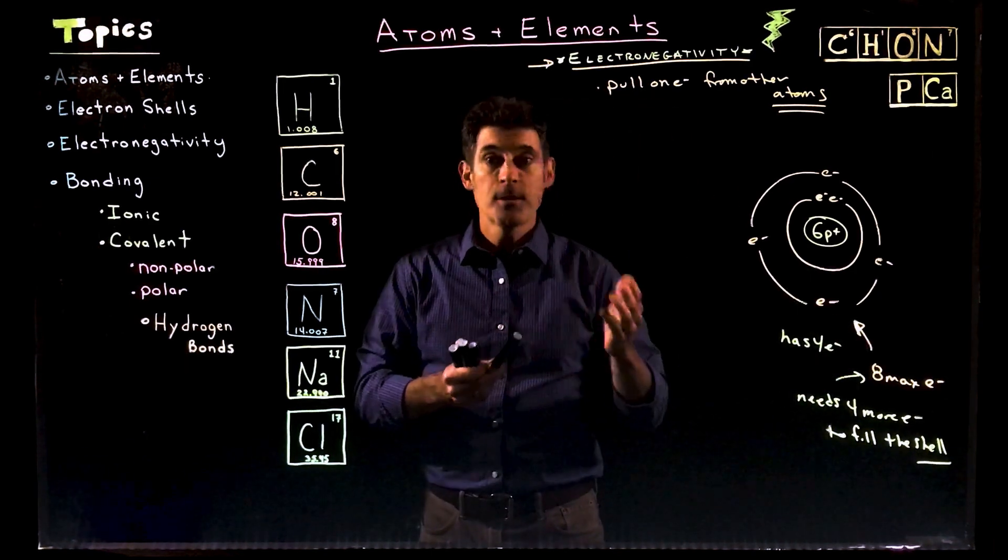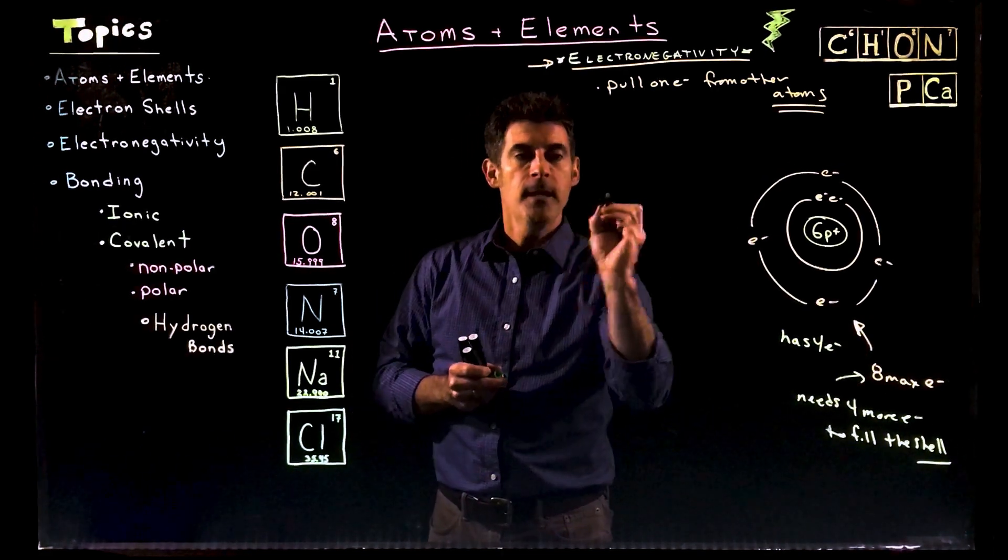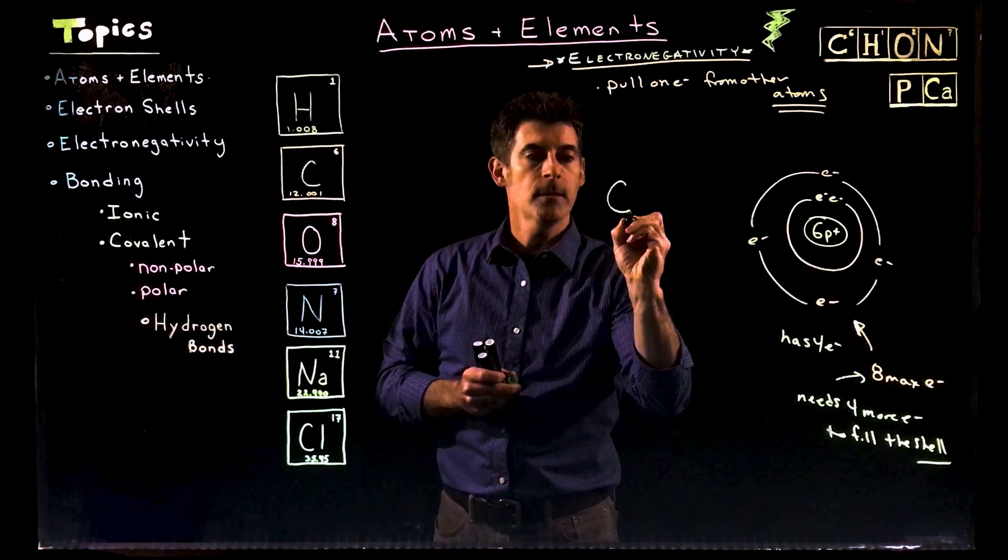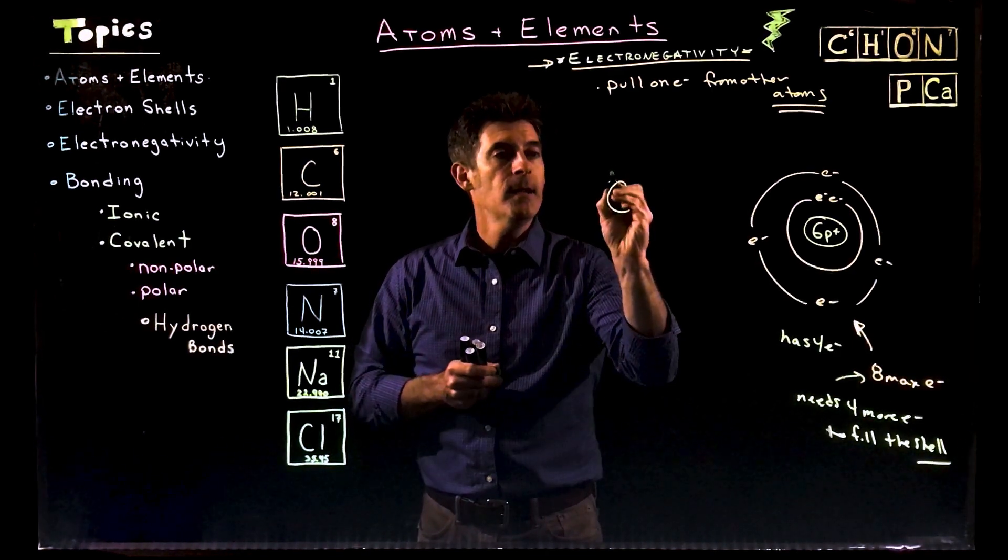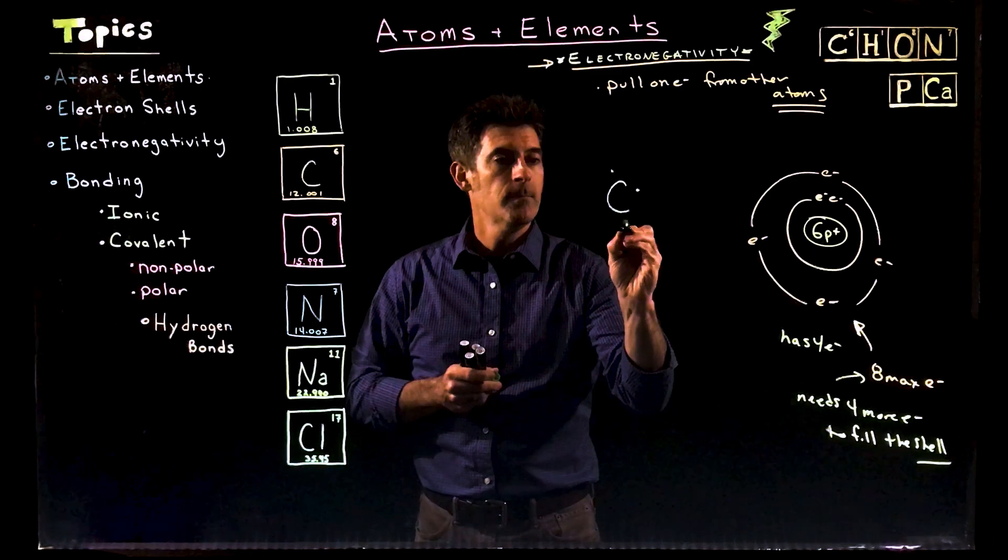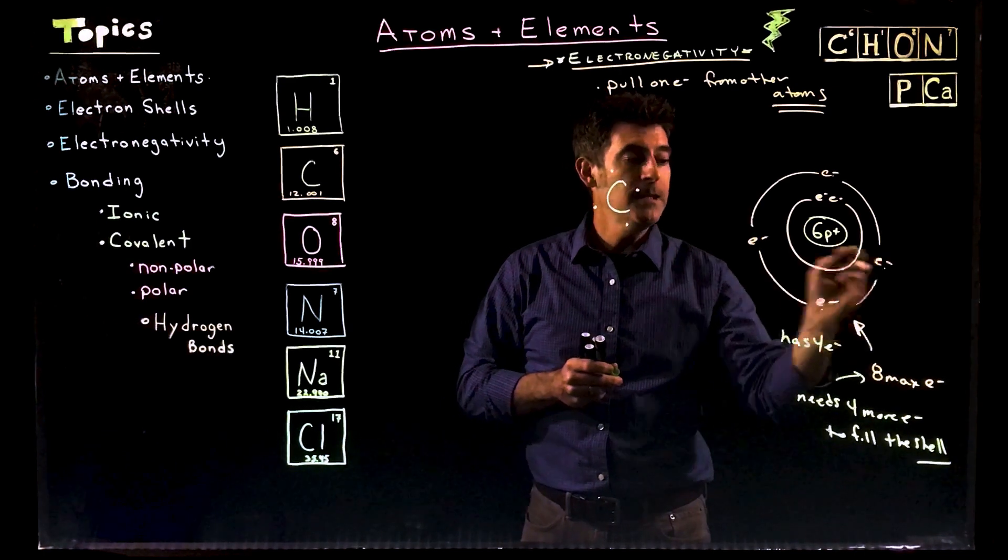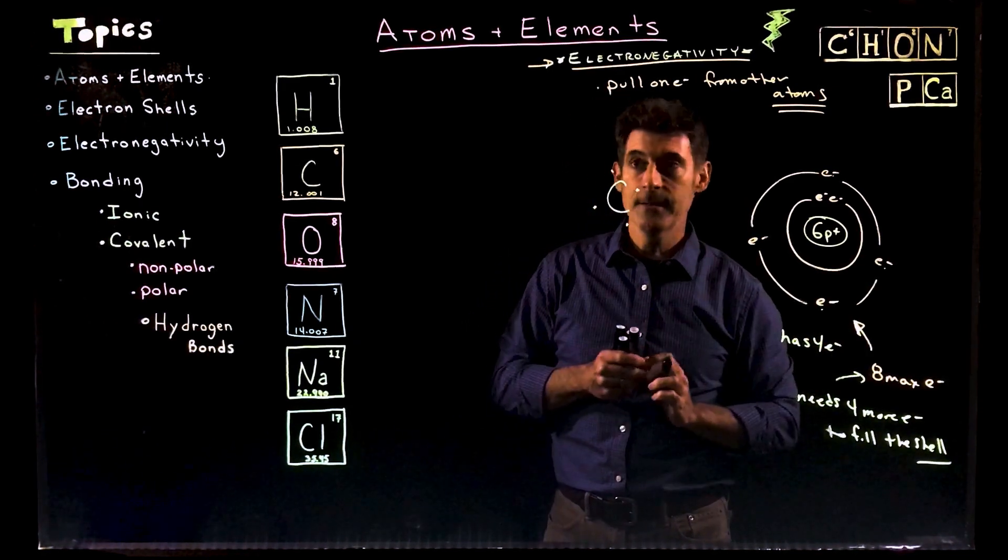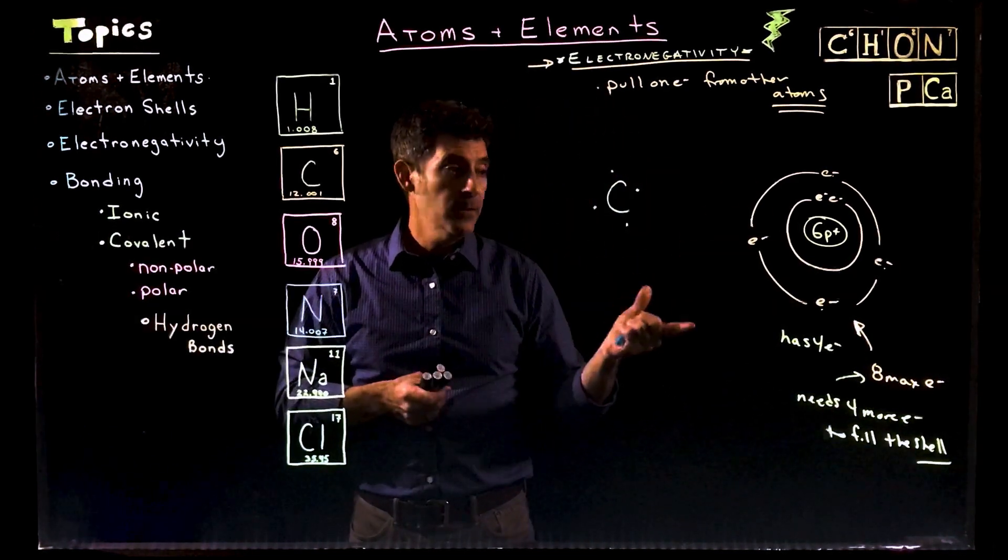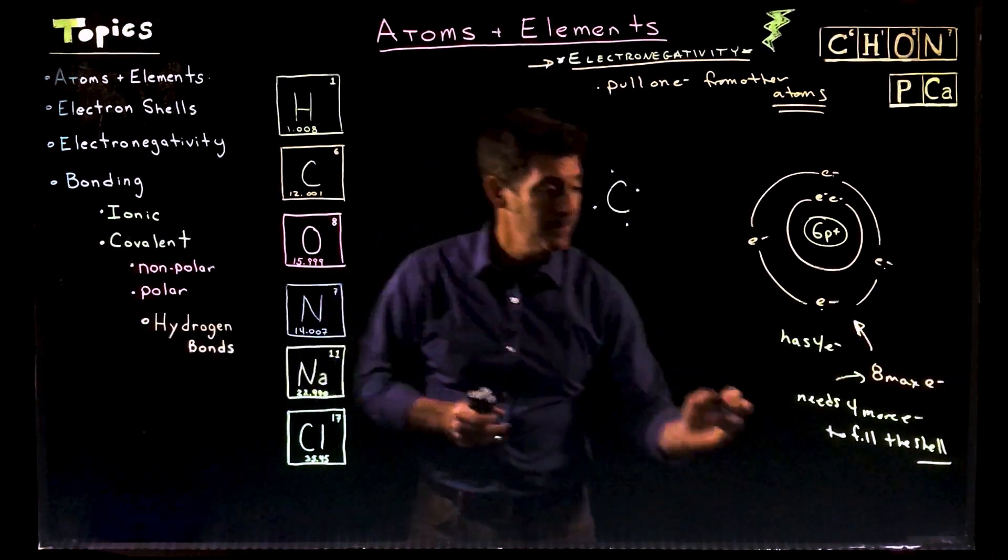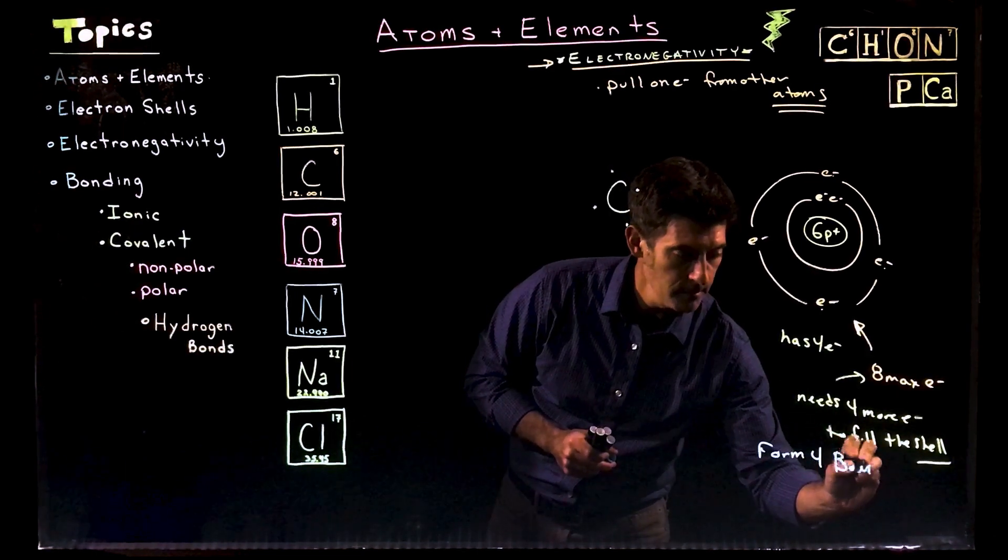Another way of drawing this, a little more simplistic way, and the way I'll tend to draw these, is something called a Lewis dot structure. In your chemistry class you'll cover it. So we'll also use the letter for the element and then just put little dots. One, two, three, four dots. Those four dots represent these electrons in the outermost shell. They're also called valence electrons.